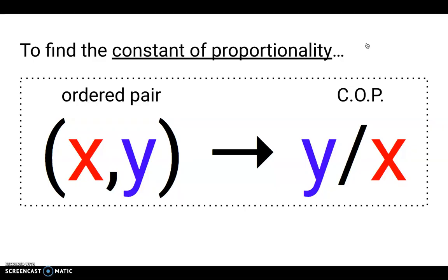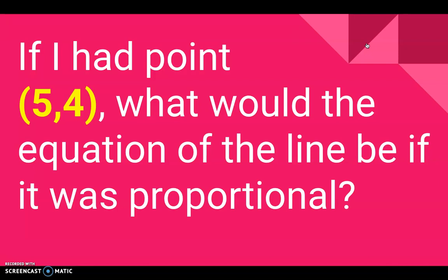In order to find the constant of proportionality we need to divide the y value by the x value. An example of this would be if I had the ordered pair (5,4) what would the equation of the line be if it was proportional?